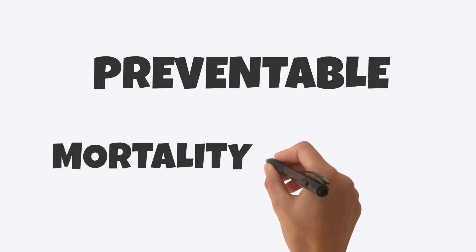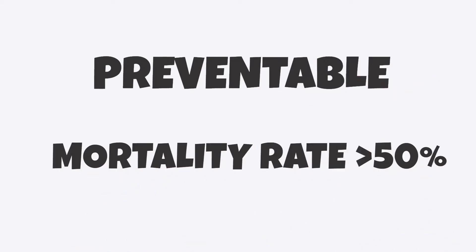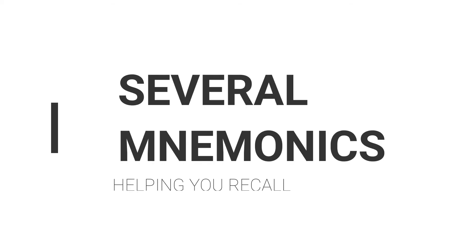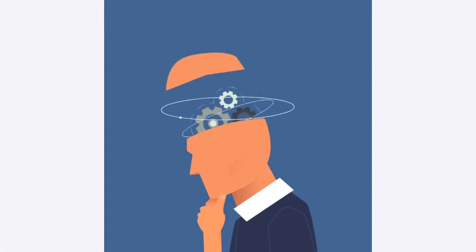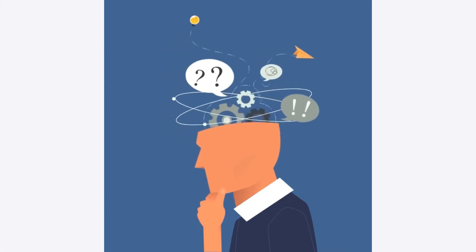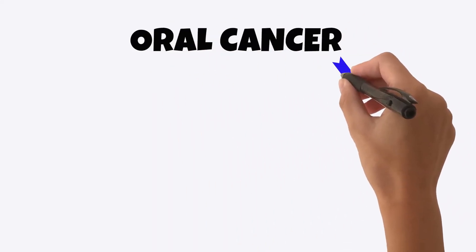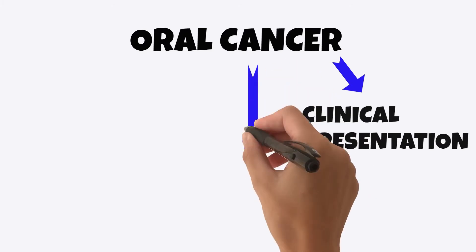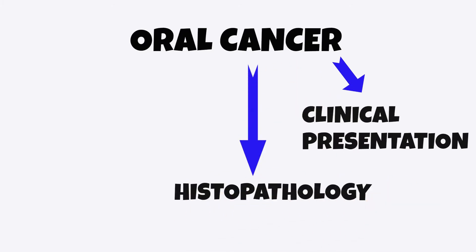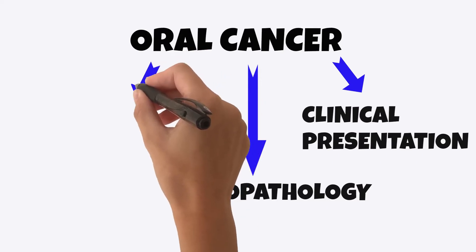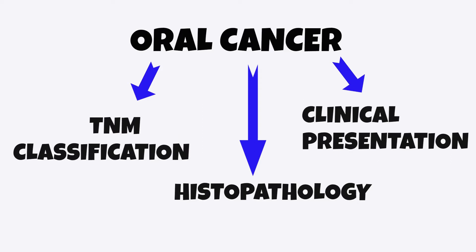Oral cancer is preventable in 75% of cases and the mortality rate is just over 50%. The UK has probably the best survival figures for diagnosed oral cancers at all stages. I'm going to share a mnemonic towards the end to help recall the classification, signs and symptoms, and clinical presentations of oral cancer. We'll also look at histopathology and the TNM classification and how it is involved in staging.